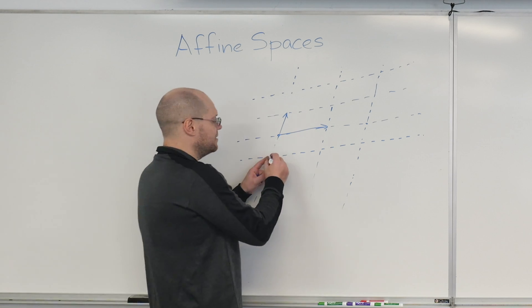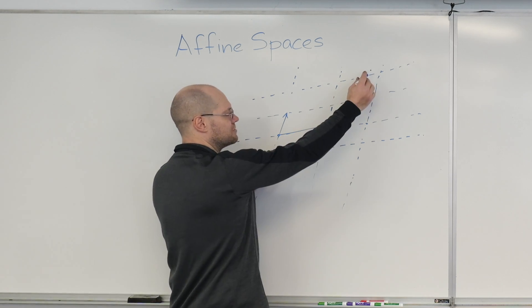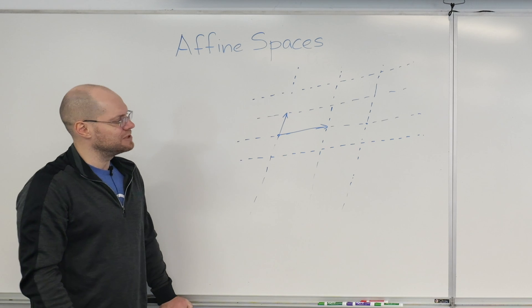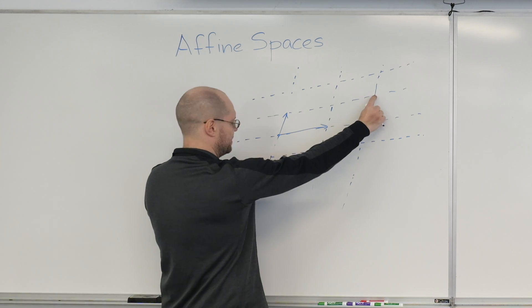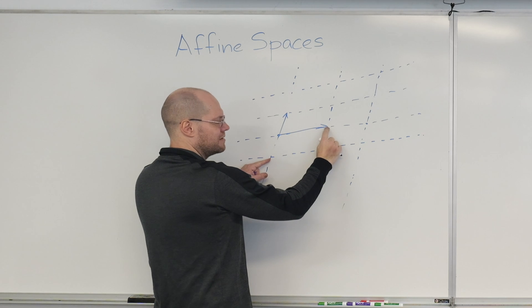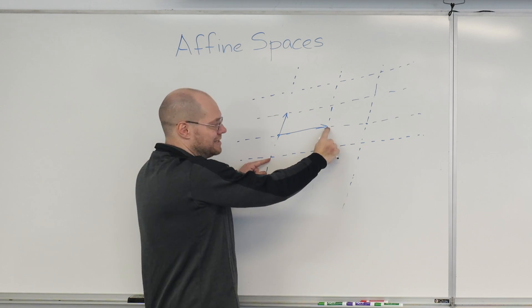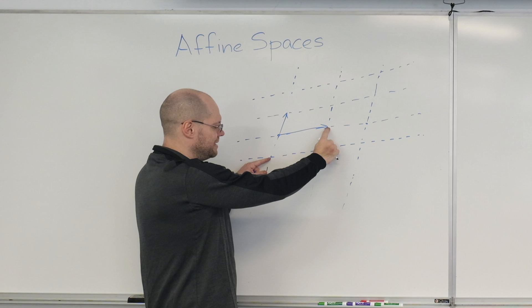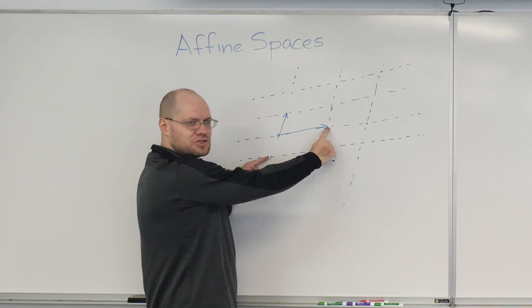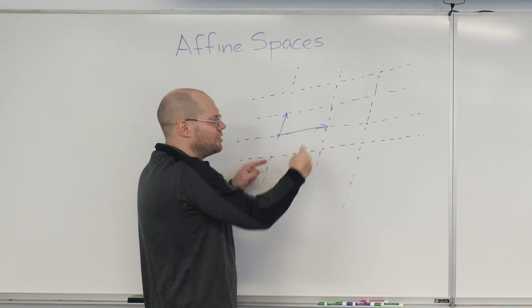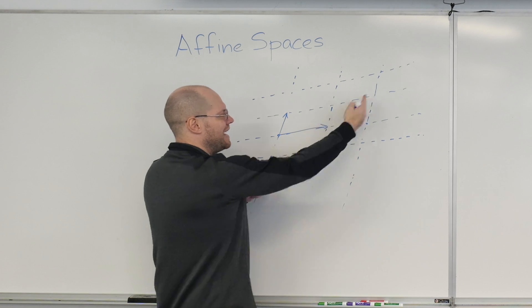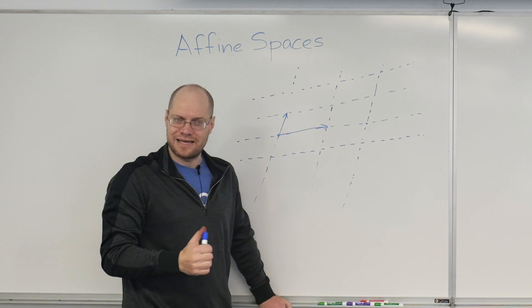I can even compare vectors that point along a different direction as long as they point in the same direction. For example, I can say that this vector from here to here is double this vector. It's literally double in the linear combination sense. But I can say it's twice as long. So even though I don't have length, I can kind of make a statement about length if we were to introduce length.